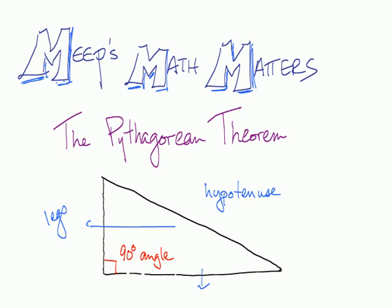The Pythagorean Theorem has to do with the lengths of these sides and how they relate to each other. Generally, we call the sides that are the legs a and b, and the hypotenuse is length c. Then the Pythagorean Theorem states a squared plus b squared equals c squared. This is just for right triangles.